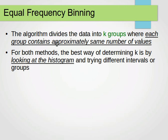For both methods — equal frequency and equal width — the best way of determining k is by looking at the histogram and trying different intervals or groups. We look at the histogram, analyze it, and try different values. Enough talking — let's have a simple example to learn how these two methods actually work.